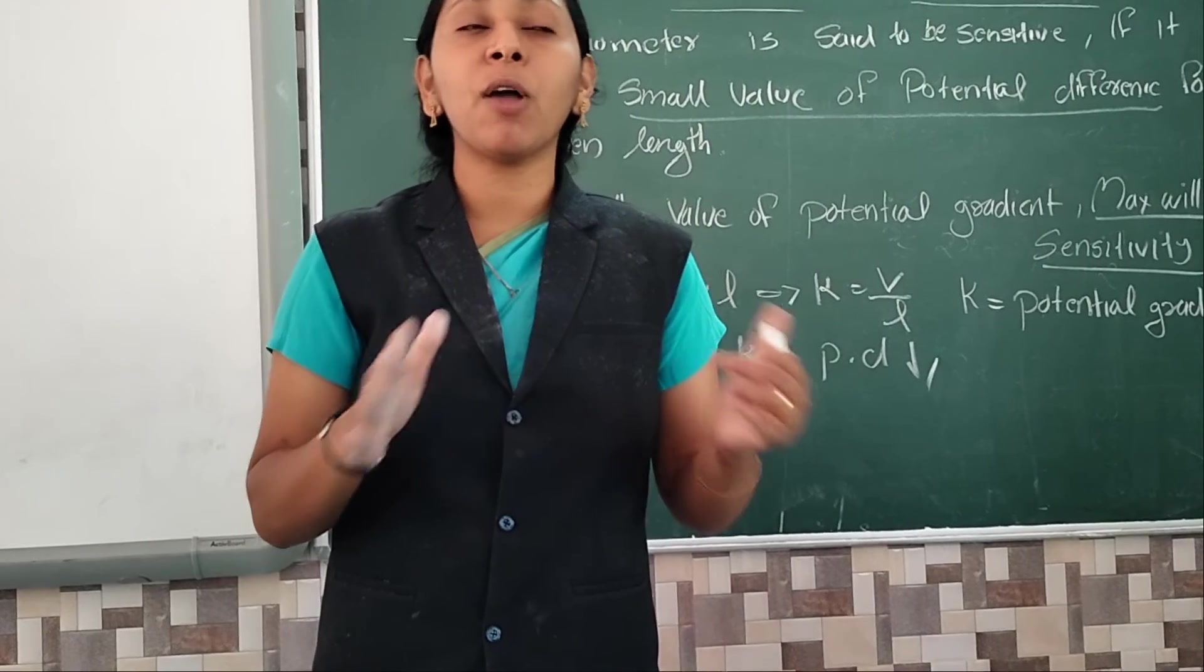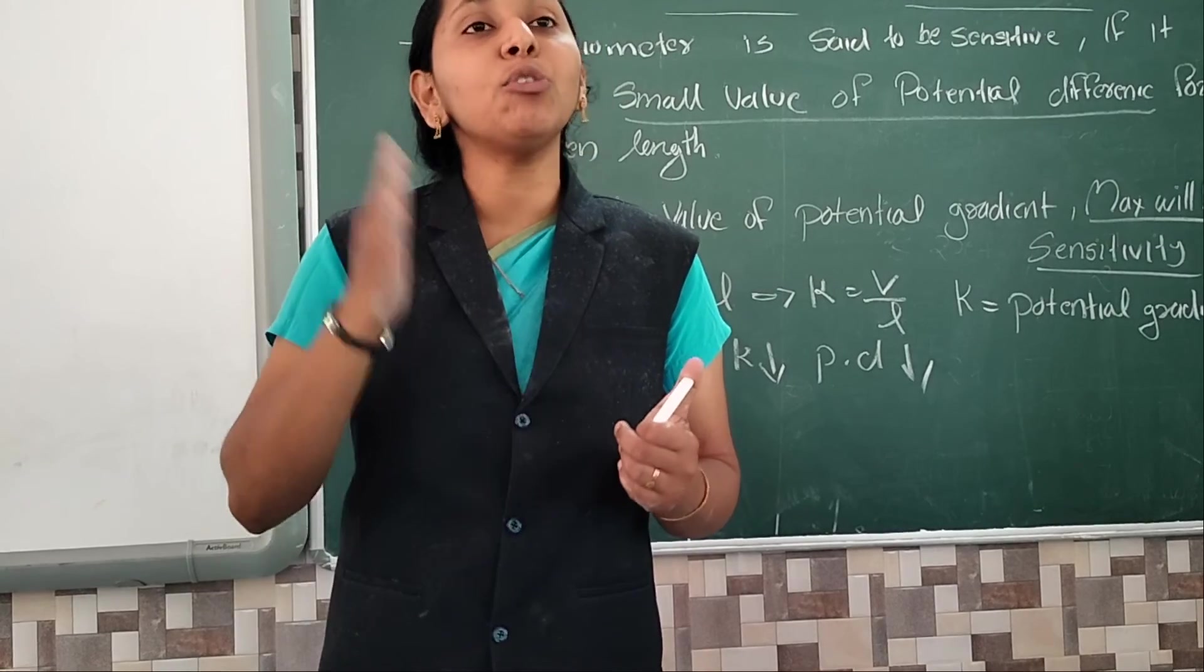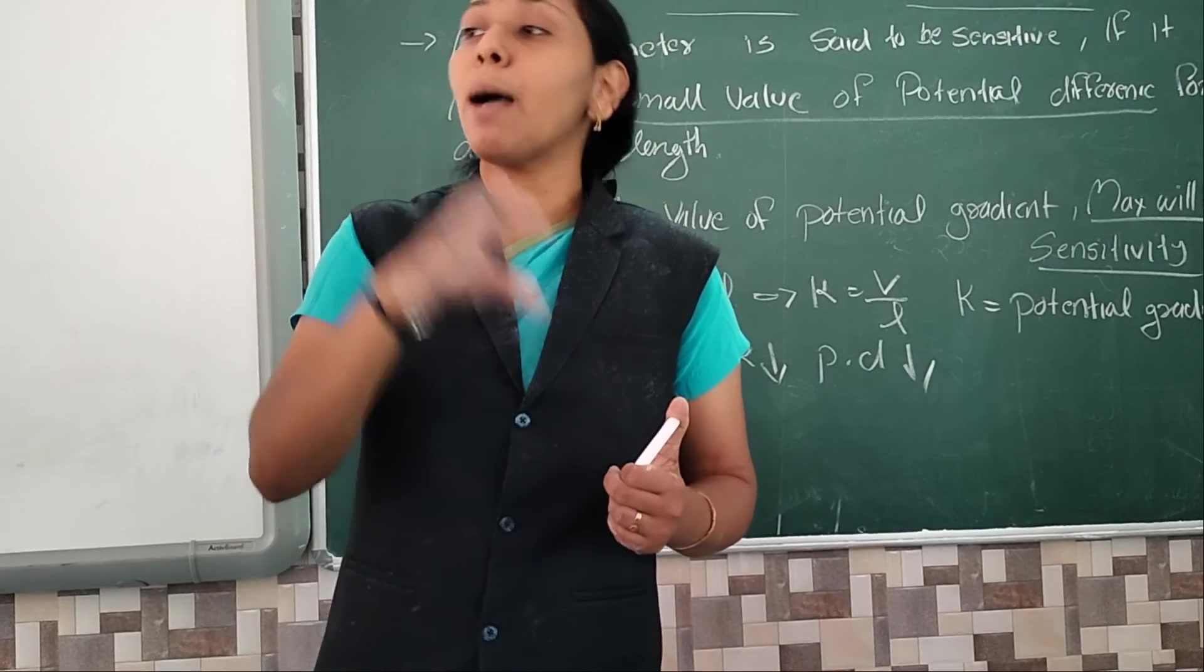So basic principle of the potentiometer, V equal to K or K equal to V by L. The K value is least, sensitivity is maximum.